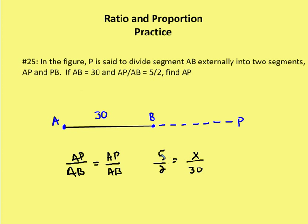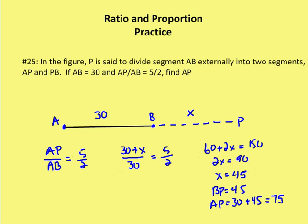So we can find out what AP is if we use our means extremes product theorem. So 150 is equal to 2x. In this case, x is going to be equal to 75. And x in this case is going to be AP. So if AB is 30, then we know that BP is going to be 45. And AP is going to be equal to 75.